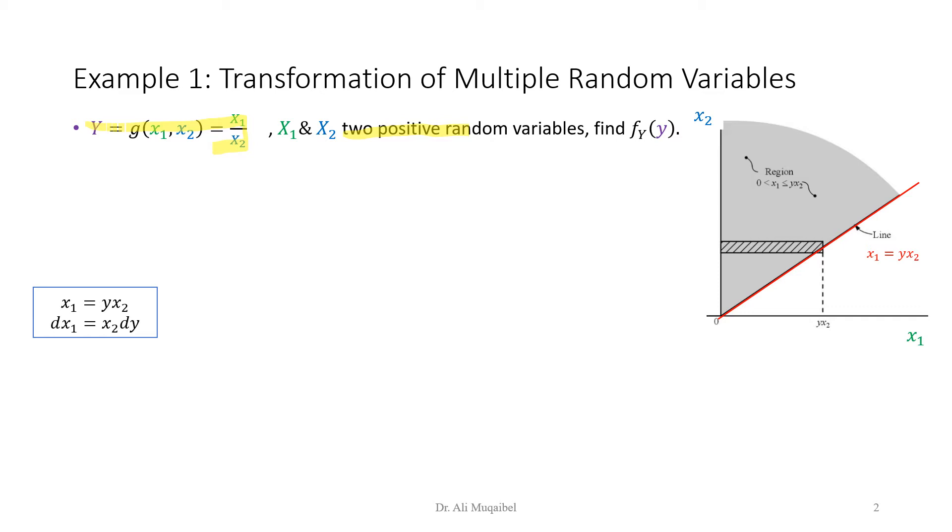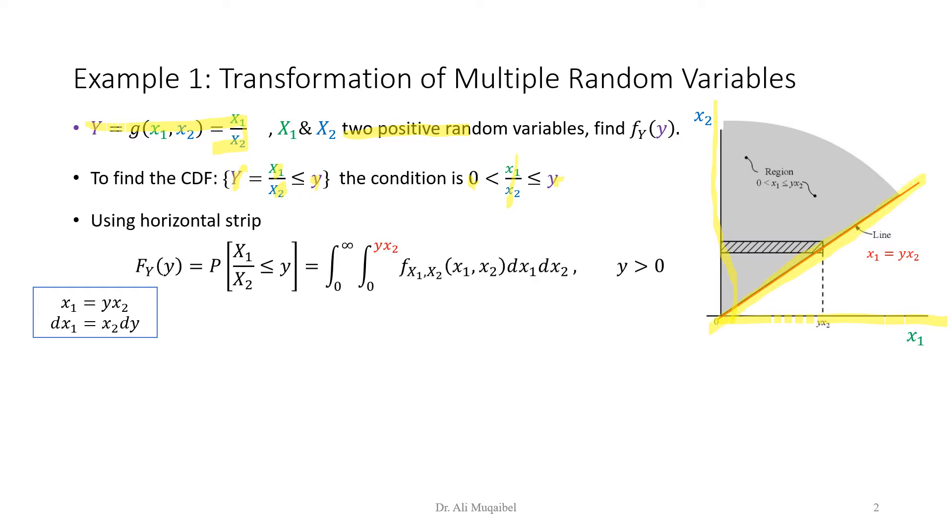So for capital Y to be less than a given quantity, the ratio x1, the green over the blue should also be in that region. So what is the region that we need to find? Remember that x1 over x2 is always positive quantity as given in the question. So it's greater than zero. And we want to consider the condition where this is less than y. If we draw the relation between x and y and x2, where these axes are x1 and this is x2, we will find that y is a straight line. Y is represented by this line. So if you want to find the CDF where y is less than a given value, we need to consider all this region.